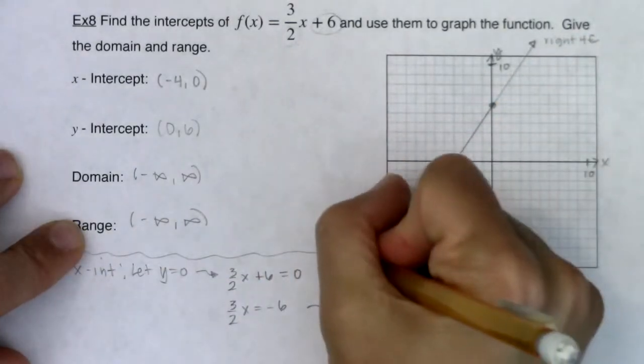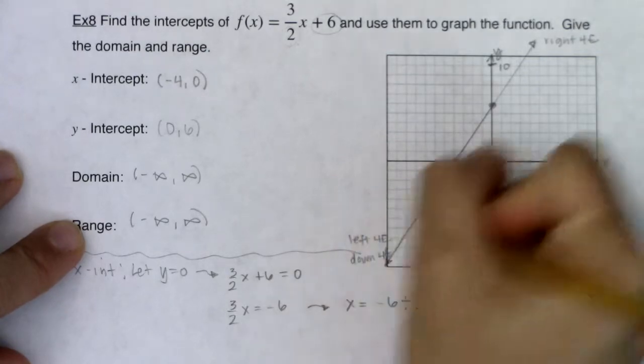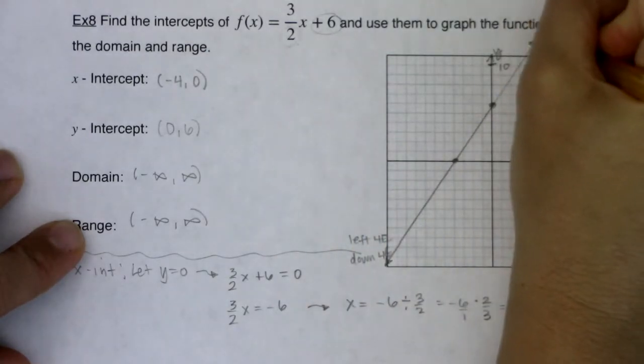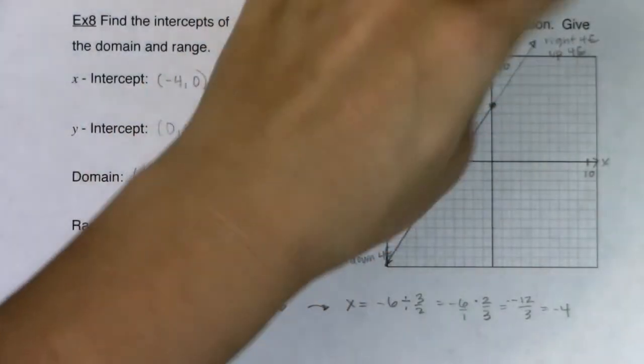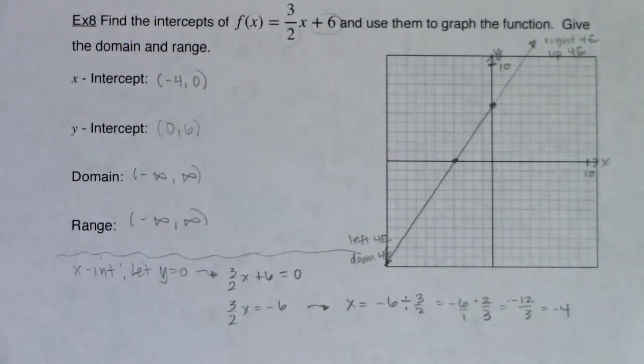So you see me lighten up from negative infinity to positive infinity. For the range, this arrow is down forever. This arrow is up forever. And I've got no breaks, no pieces, no nothing in my line. It's continuous negative infinity to infinity.